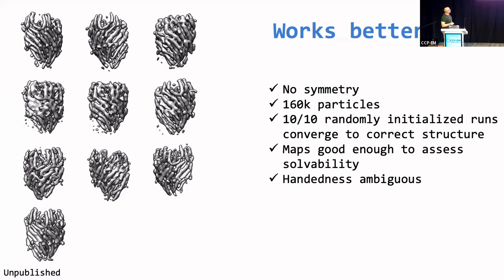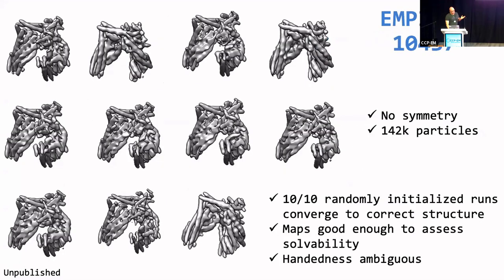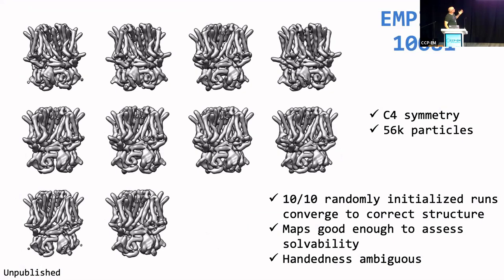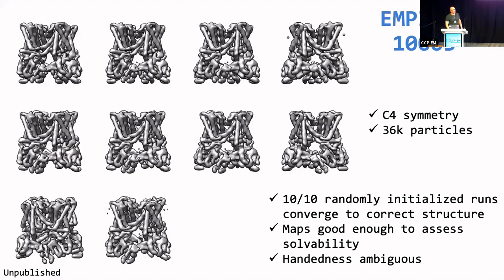10 out of 10 randomly initialized runs converge to an acceptable structure from which you would conclude, by looking at it, that this dataset is going to be possible to reconstruct at high resolution. That's really the objective of this approach — we don't want to provide the best possible map; we want an ab initio reconstruction code that is robust, produces the same result every time, and can give you enough information to tell whether this is going to work. This is another example of an asymmetric membrane protein, EMDB 10437, no symmetry, 140,000 particles. And this is an old friend of ours, the HCN hyperpolarization channel from Rod MacKinnon's lab — we had processed this several times before with older versions of SIMPLE. And then this is just to show that we can do symmetrical structures.